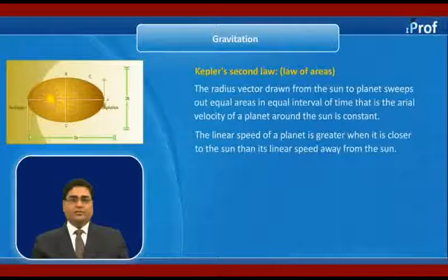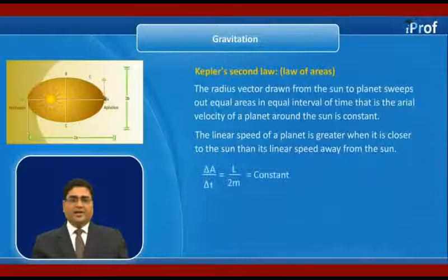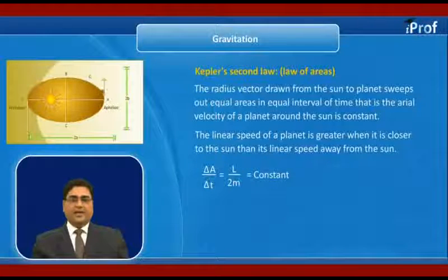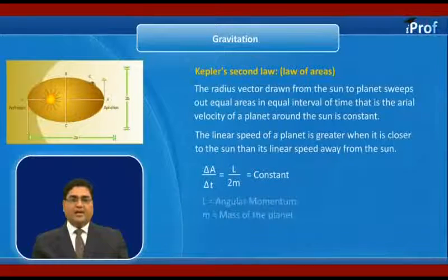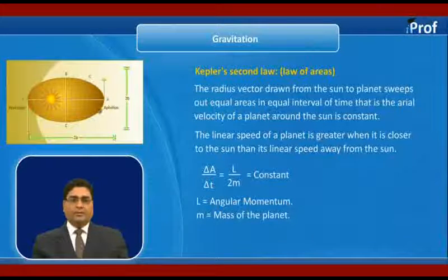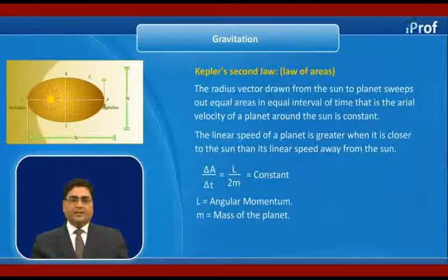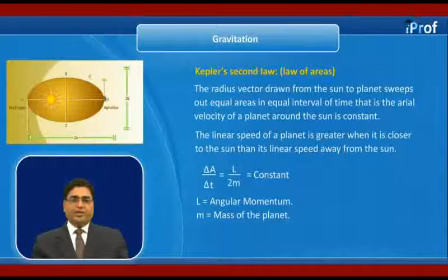According to second law, delta A upon delta T equal to capital L upon 2M equal to constant, where capital L is the angular momentum and M is the mass of planet.